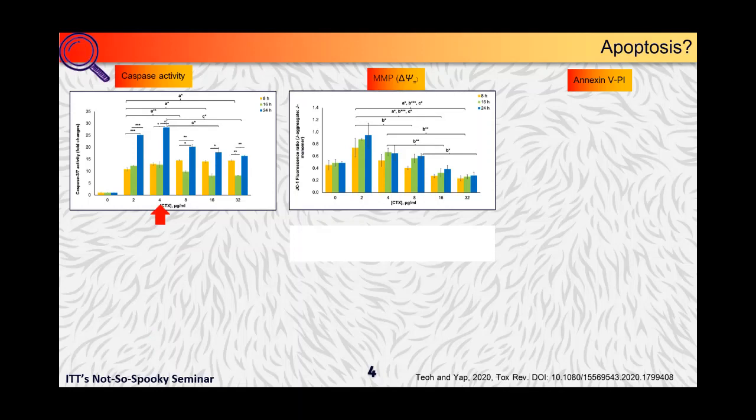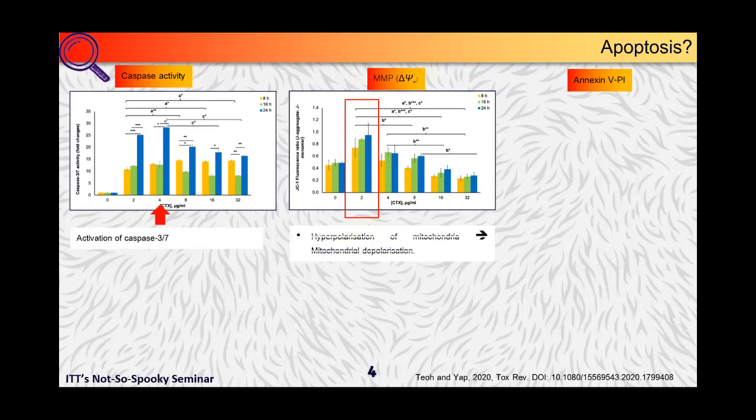We actually observed activation of caspase 3-7 at IC50 values, which is 4 micrograms per ml, while in the mitochondrial membrane potential we first observed an initial elevation of the JC-1 fluorescence intensity ratio at the lowest treatment concentration when compared to untreated cells. This actually tells us the potential of mitochondrial hyperpolarization, which is presumably a prerequisite and sensitization event before the depolarization of mitochondria. As the treatment concentration increased beyond 2 micrograms per ml, the mitochondrial membrane integrity appears to compromise, leading to typical apoptosis-associated depolarization.